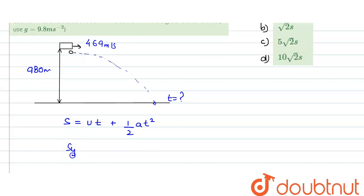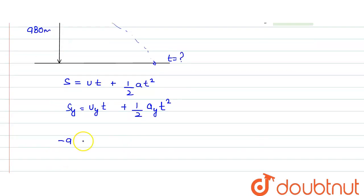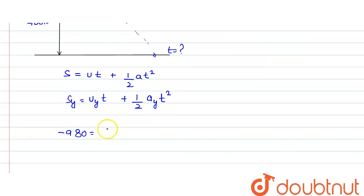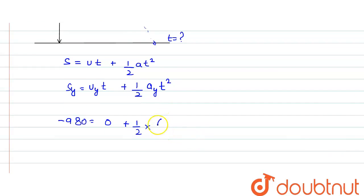For the y-direction: displacement in y = initial velocity in y × time + ½ × acceleration in y × time². The displacement in the y-direction is downward, so it is −980 meters. The initial velocity in the y-direction is 0, since the aeroplane moves only along x. So that term becomes 0. The acceleration in y is g = 9.8 m/s², downward, so we take −9.8.